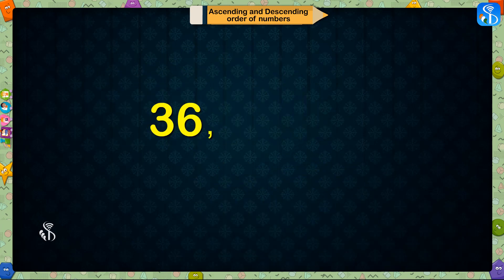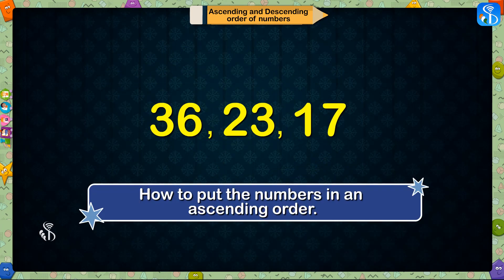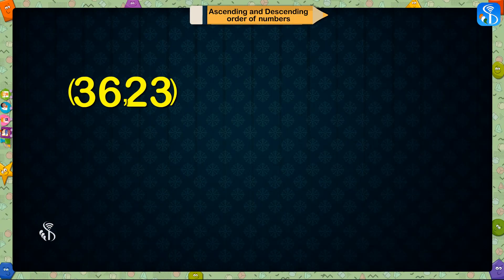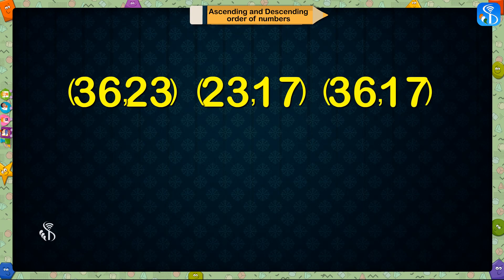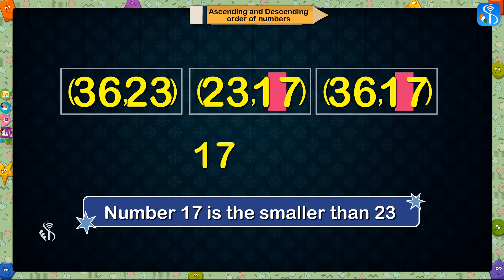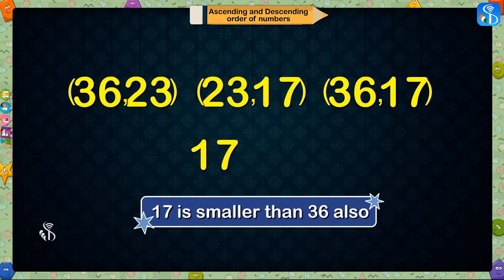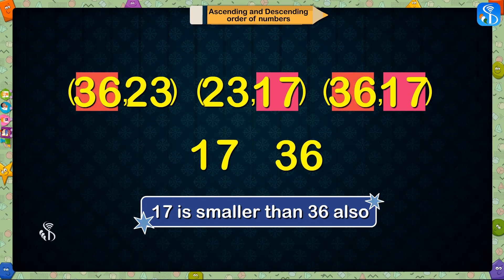Now we will see how to put 36, 23, 17 these numbers in an ascending order. First of all, compare these pairs: 36 and 23, 23 and 17, 17 and 36. Look here, from all three numbers, number 17 is smaller than 23 and it is smaller than 36 also.